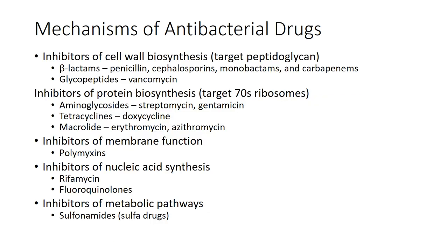On the next slide, different types of drugs are classified by their antibacterial action. Inhibitors of cell wall biosynthesis include beta-lactams and our first natural antibiotic, penicillin, as well as vancomycin. Moving to protein biosynthesis inhibitors, we have azithromycin, doxycycline, and streptomycin — very common antibiotics. And then inhibitors of metabolic pathways include the sulfa drugs, a very common group of prescribed antimicrobials.